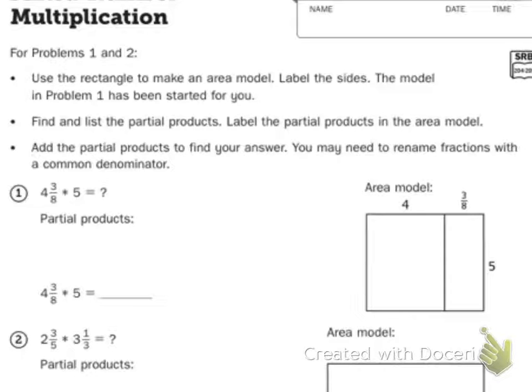Today we did lesson 7.1, multiplication of mixed numbers. Your goal was to use the area model and partial products to multiply mixed numbers. We did several of these in class.